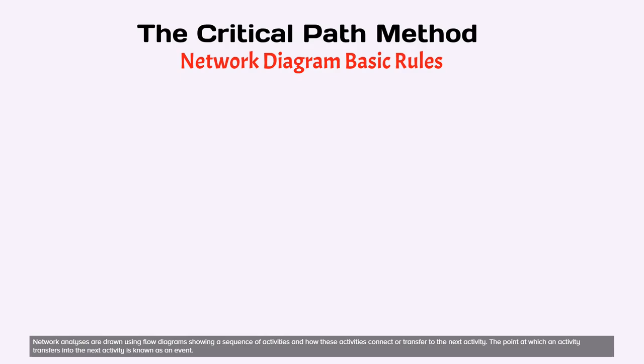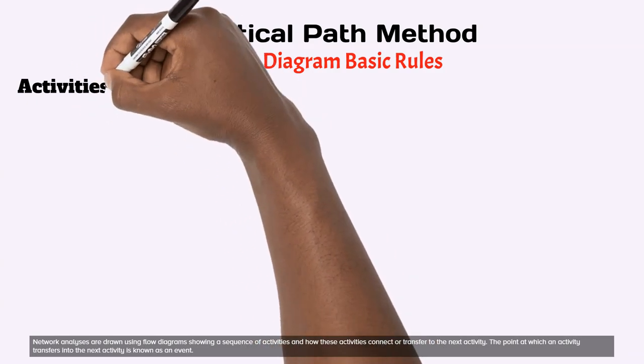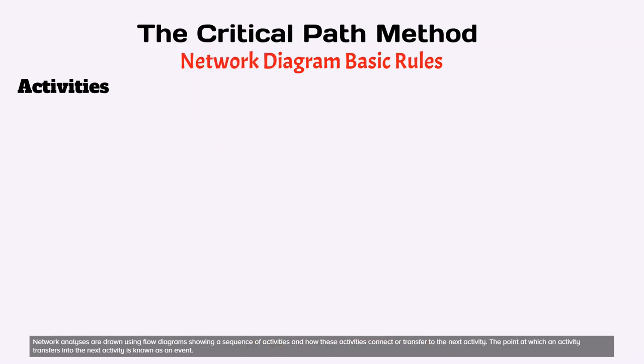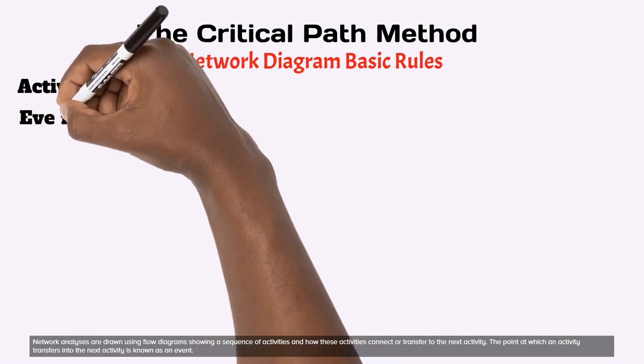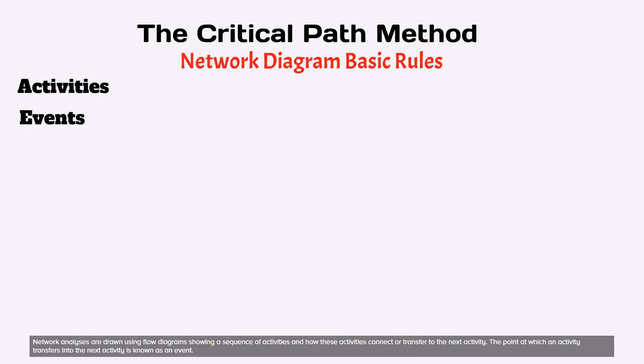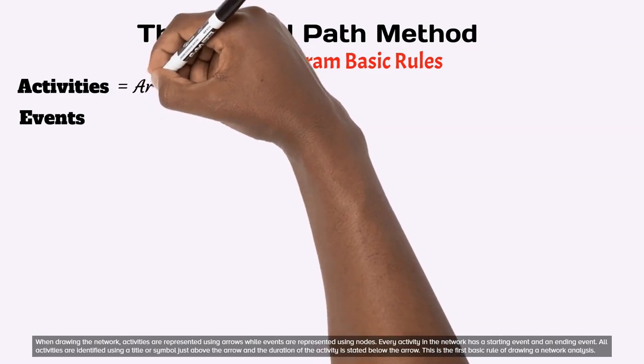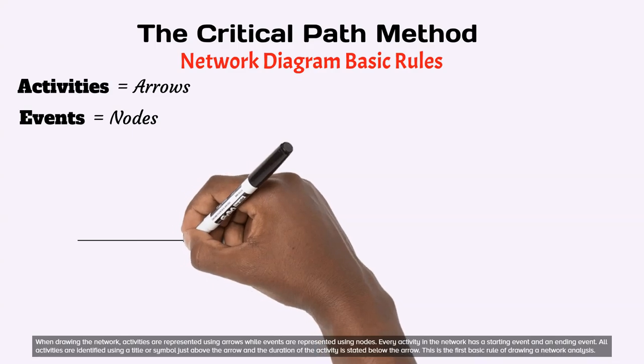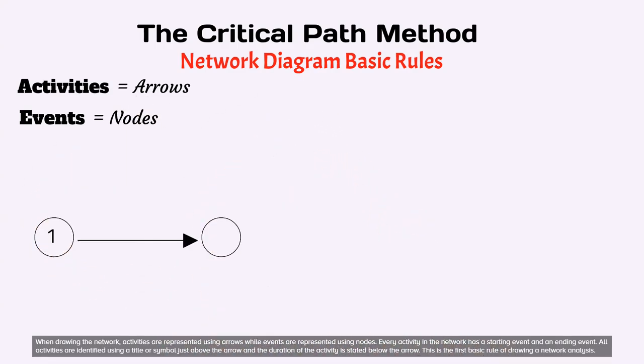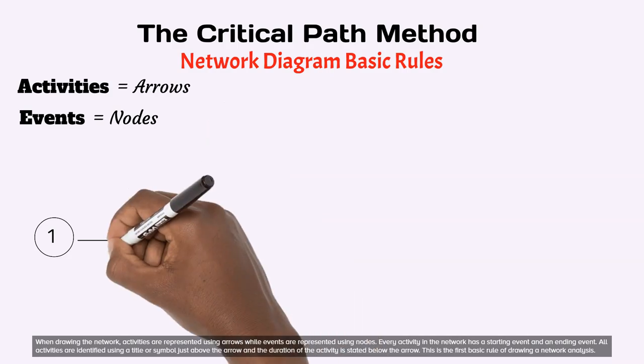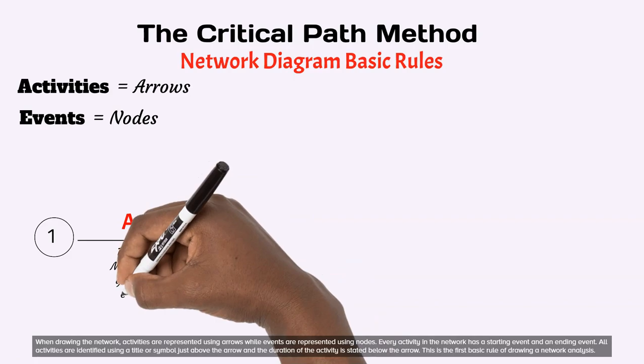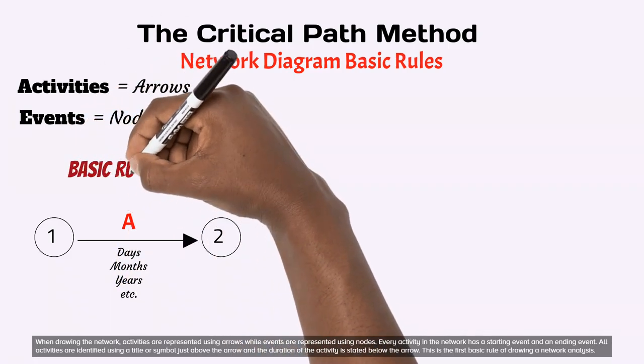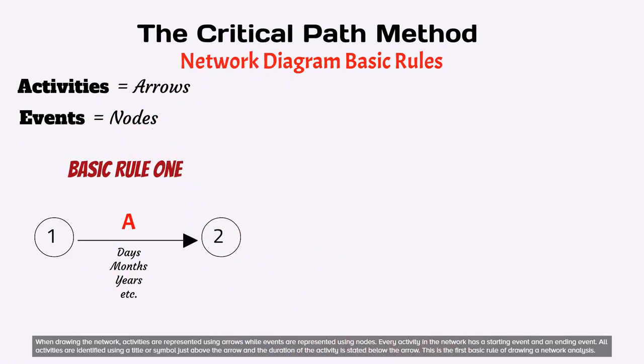Network analyses are drawn using flow diagrams showing a sequence of activities and how these activities connect or transfer to the next activity. The point at which an activity transfers into the next activity is known as an event. When drawing the network, activities are represented using arrows while events are represented using nodes. Every activity in the network has a starting event and an ending event. All activities are identified using a title or symbol just above the arrow and the duration of the activity is stated below the arrow. This is the first basic rule of drawing a network analysis.